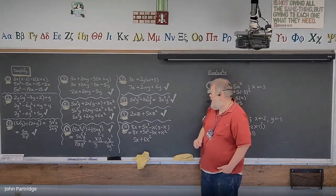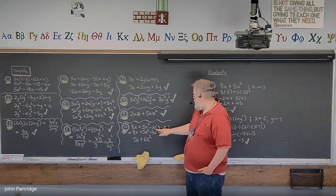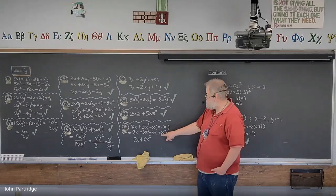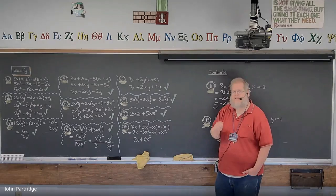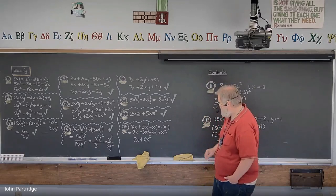Problem 10: 8x + 5x² - x(3 - x). Distributive property on -x(3 - x): -x times 3 is -3x, and -x times -x is +x². Are there like terms? Yes — 5x² + x² = 6x², and 8x - 3x = 5x. Final answer: 5x + 6x².